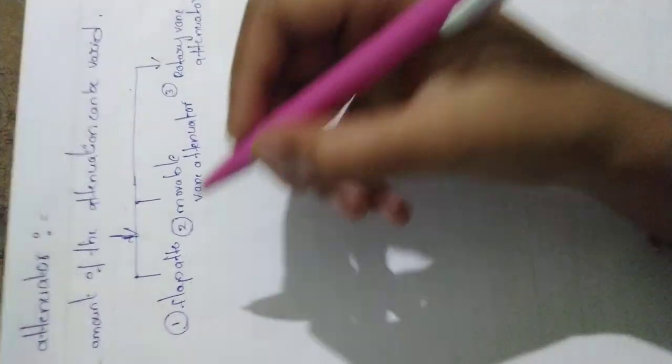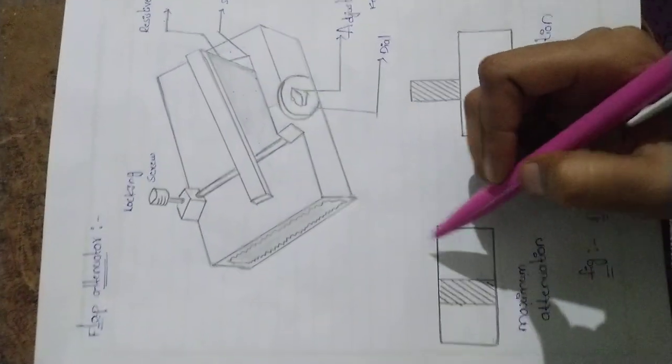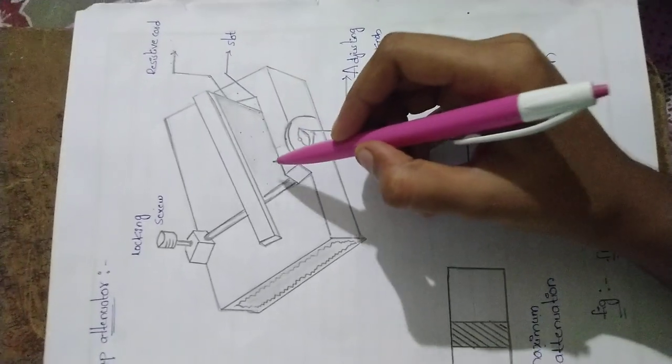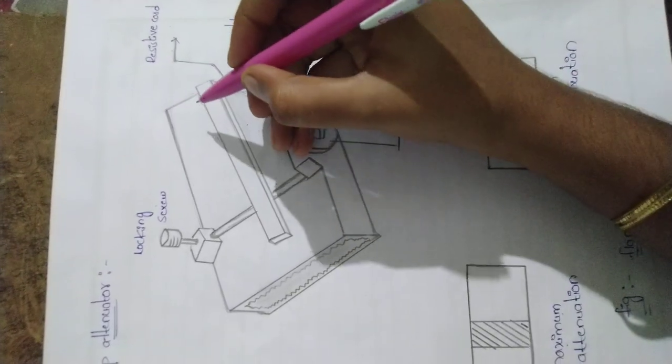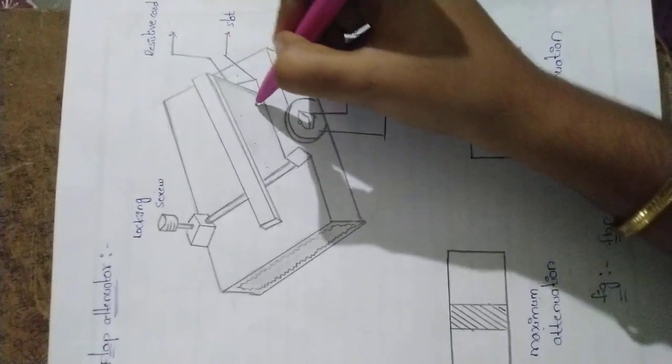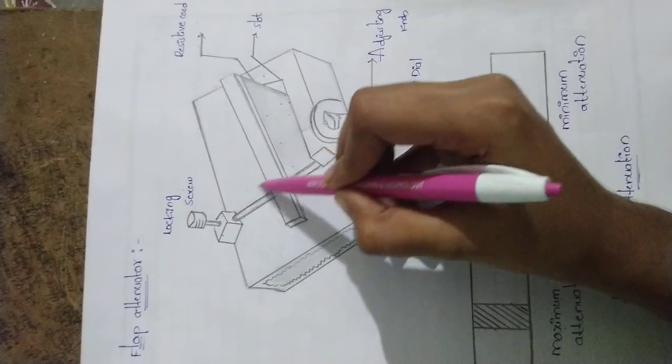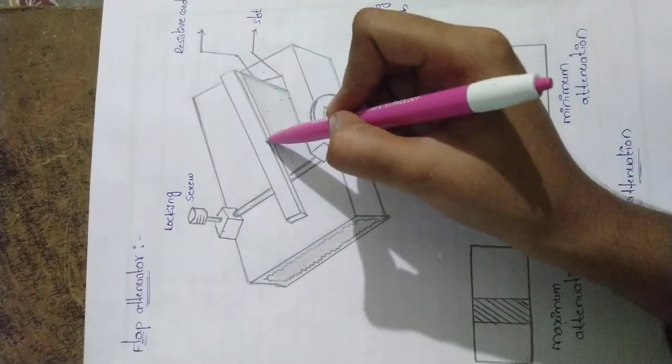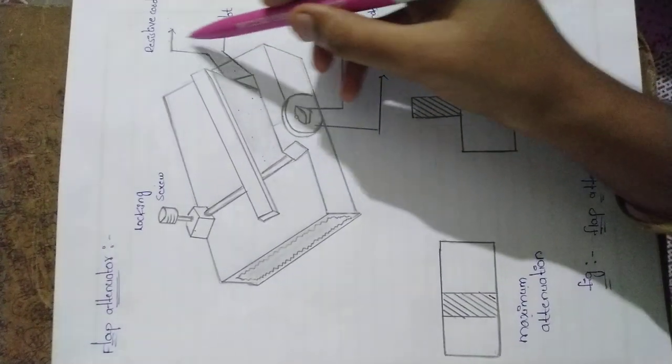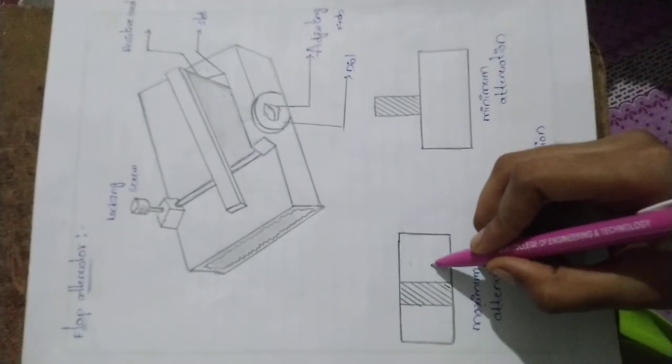Let's see Flap Attenuator. This is the diagrammatical representation of Flap Attenuator. In this flap attenuator, a resistive cord is inserted inside a slot and a locking screw is provided to lock the position of the resistive cord to get required attenuation. If the resistive cord is inserted completely into the slot, maximum attenuation will occur.